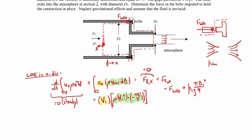The only other place where mass crosses the control surface is on the right side, at the outlet, with velocity v2 in the positive x direction. The mass flow rate term is density times v2 (i-hat) dotted with the outlet area, which is positive pi*d2²/4 (i-hat), because the outward-pointing normal on the outlet surface points in the positive x direction.